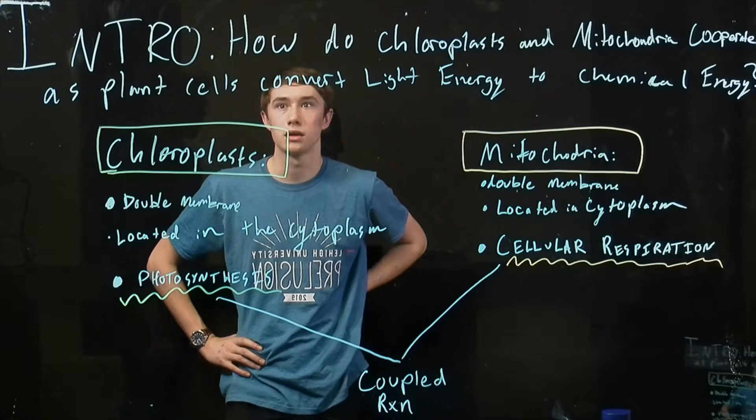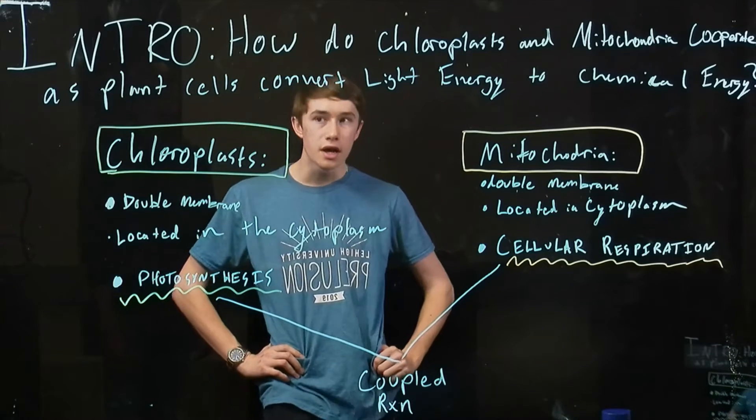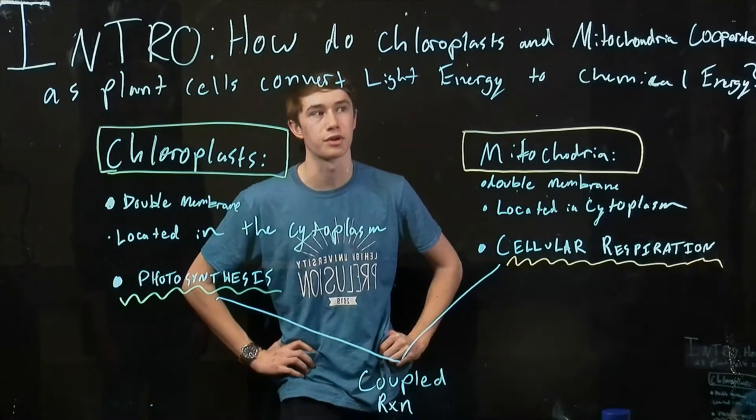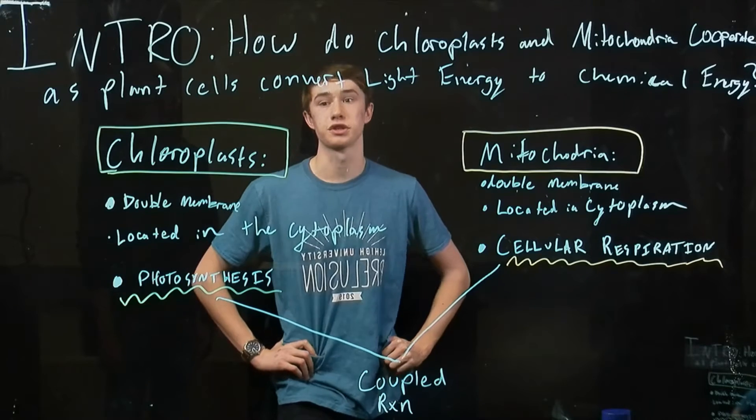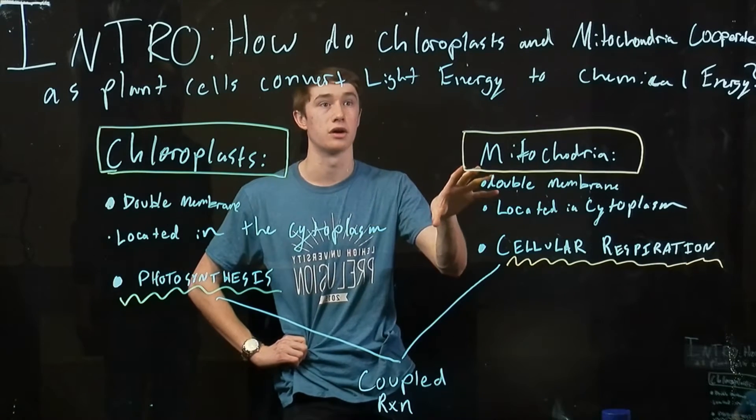All right, so our leading question was how do chloroplasts and mitochondria cooperate as plant cells convert light energy to chemical energy? And it's a pretty interesting question, and the two main components are the chloroplast and the mitochondria.